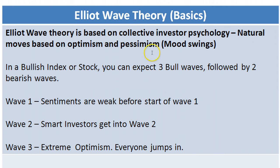Elliott Wave Theory was framed way back in the early 1900s and it is based on collective investor psychology — basically the natural mood swings between investors on being bullish and bearish on the stock market or a particular stock. Trying to predict the collective thinking that an investor or a trader has is difficult, and Elliott Wave Theory is the closest theory that tries to help us there.